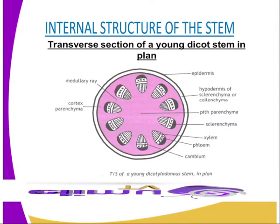Our second structure is the cortex, as you can see from our diagram. The cortex is the region of the stem beneath the epidermis; it extends inward to the vascular bundles. The following tissues may be found within the cortex: the parenchyma and the sclerenchyma.